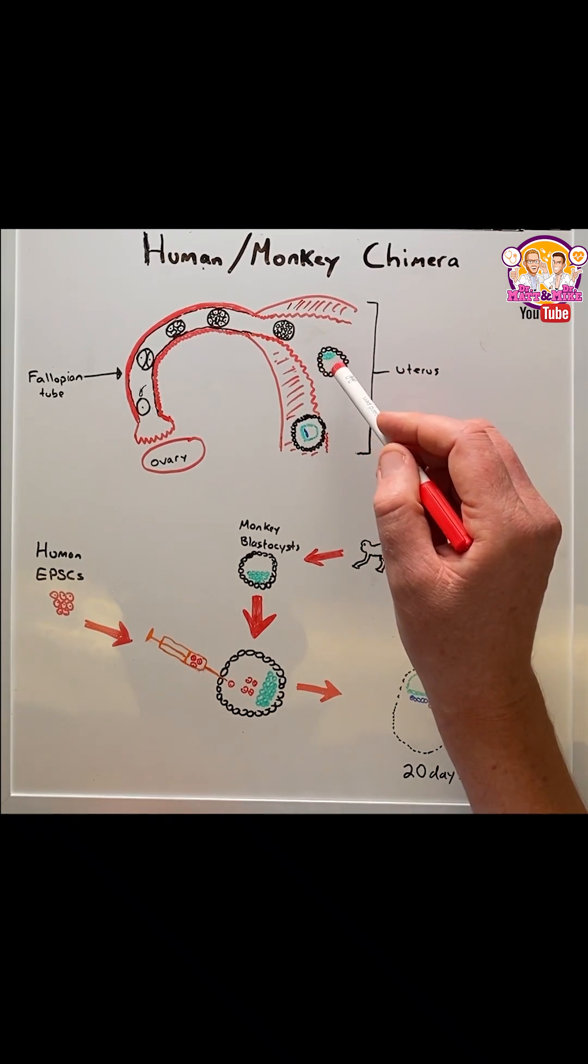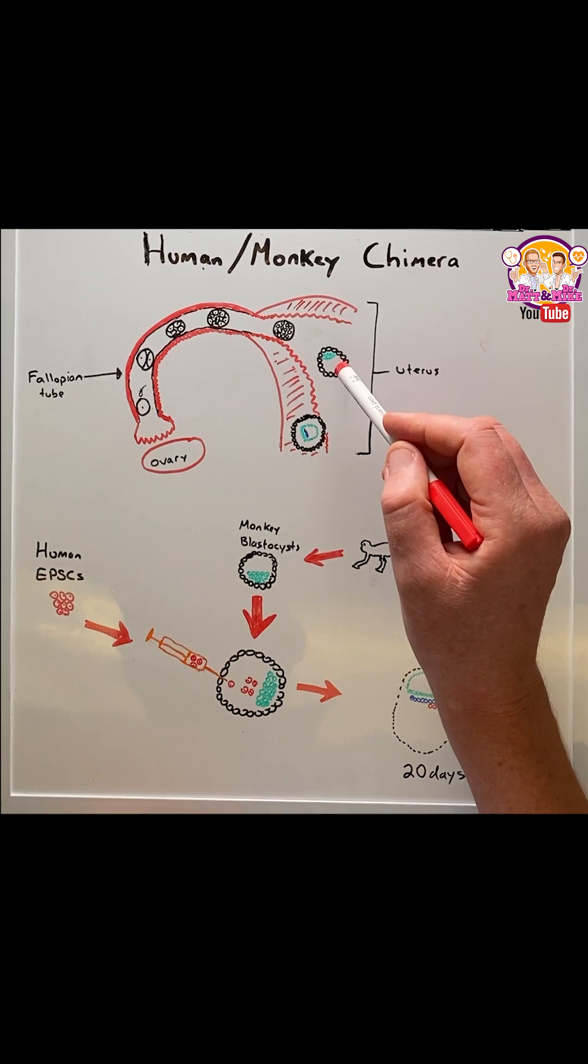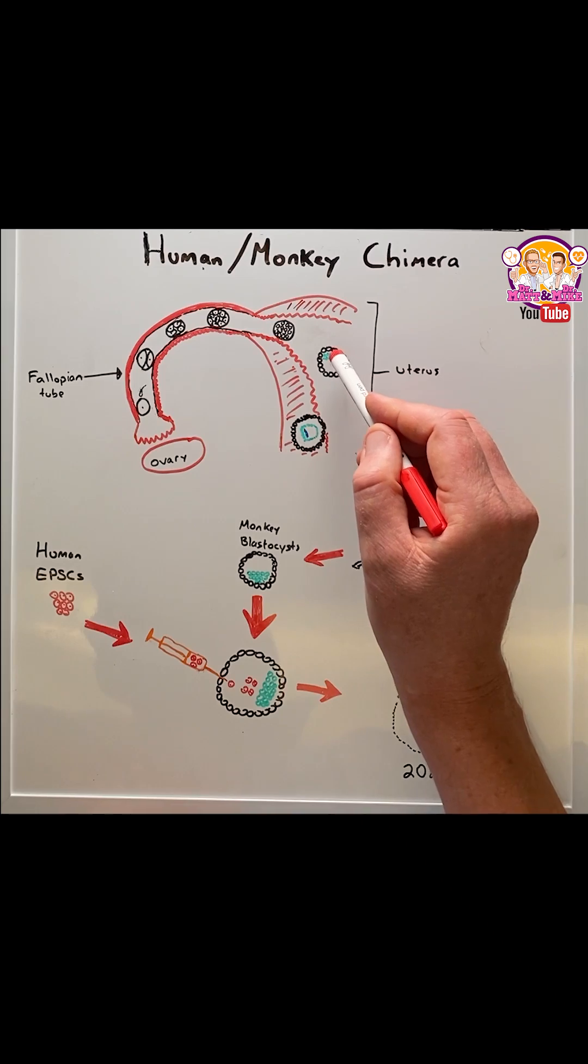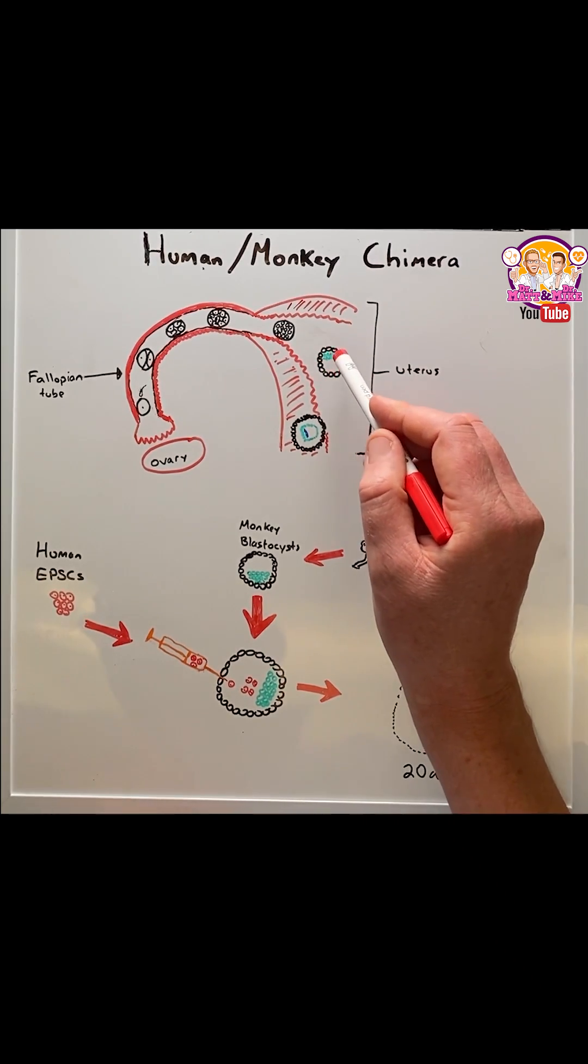At day five the cells make their first differentiation into a group shown in black which become placenta cells, and cells shown in green that become the embryo.